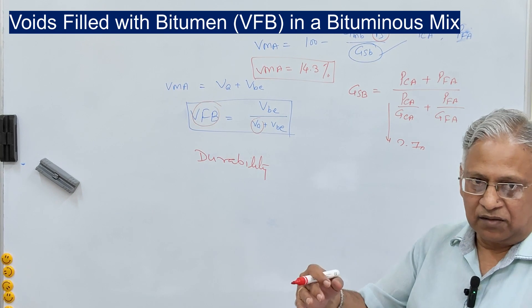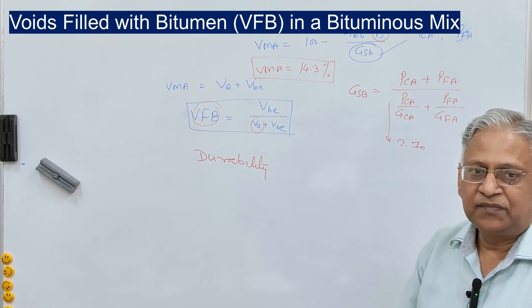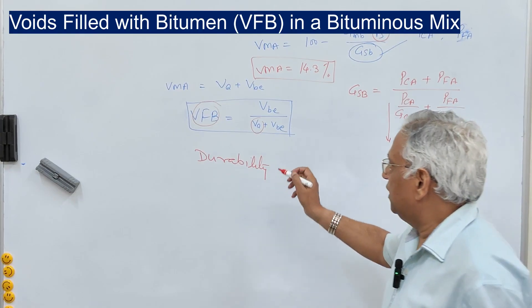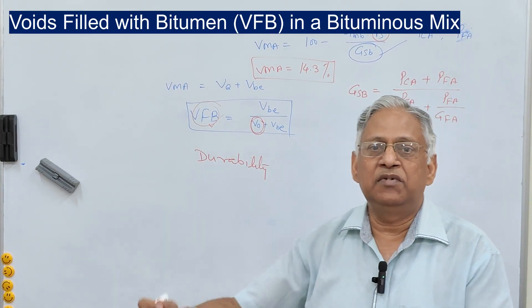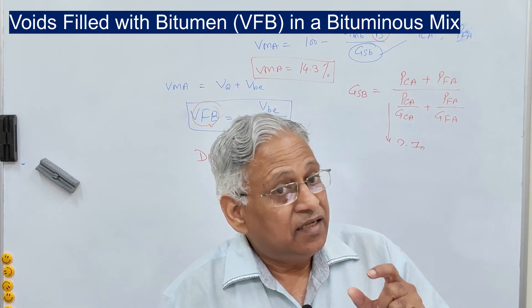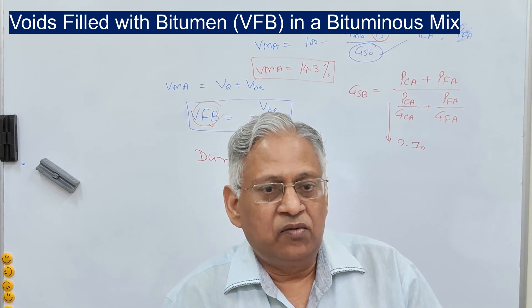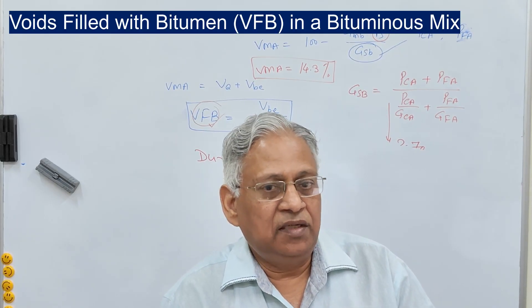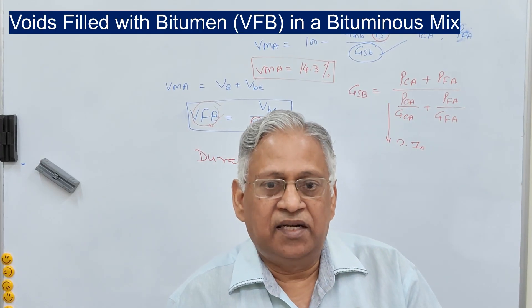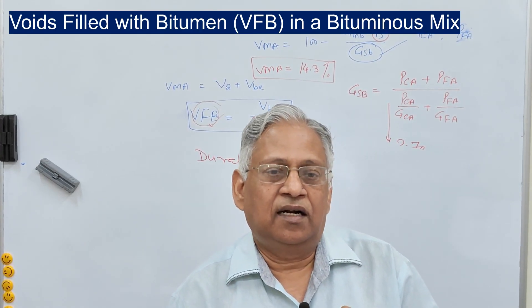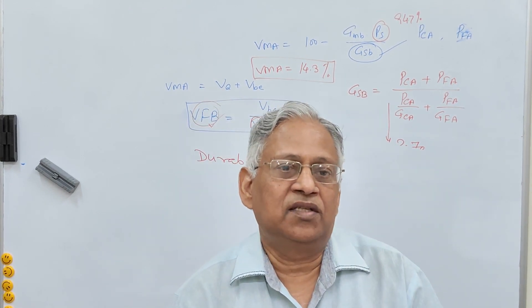Similarly, when you design a mix for heavy traffic or as a binder course, for example DBM, the IRC code suggests such a mix be designed at 3.5 percent air voids. When you keep air voids low, VFB will increase and may cross the limit of 75 percent — even though air voids are within the permissible limit. Low air voids are preferred for resisting permanent deformation in the base layer, but the VFB requirement helps to avoid mixes that are susceptible to rutting in heavy traffic situations.